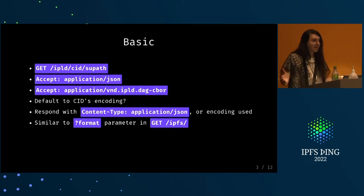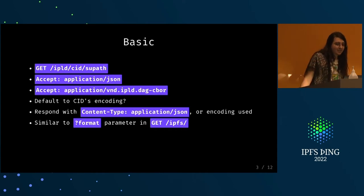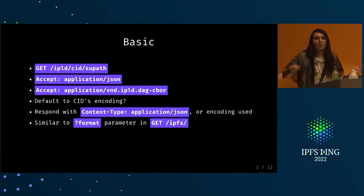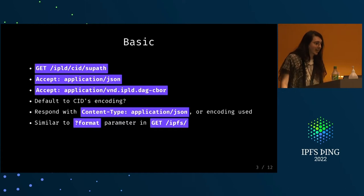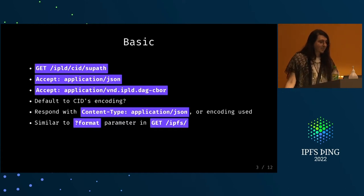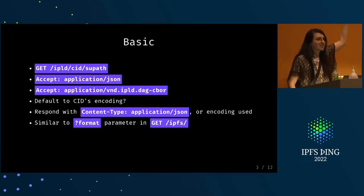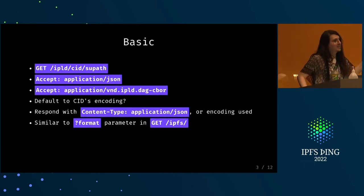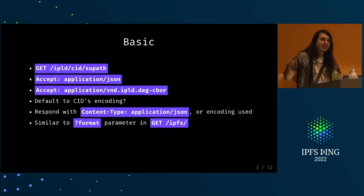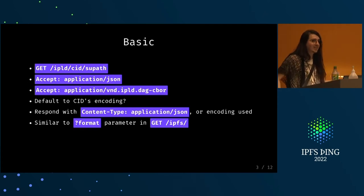With that in mind, let's talk about some of the basics — the low-hanging fruit of what an IPLD path in a gateway would look like. Obviously getting a CID would be useful and we could get from the new slash IPLD subpath on a gateway. We can already start extending that with leveraging the data model by changing what format we want that data to be downloaded in.